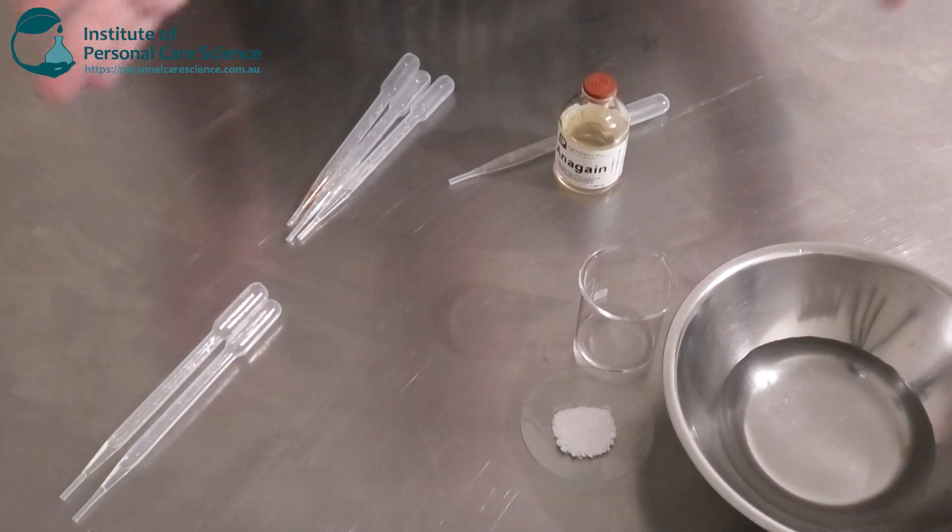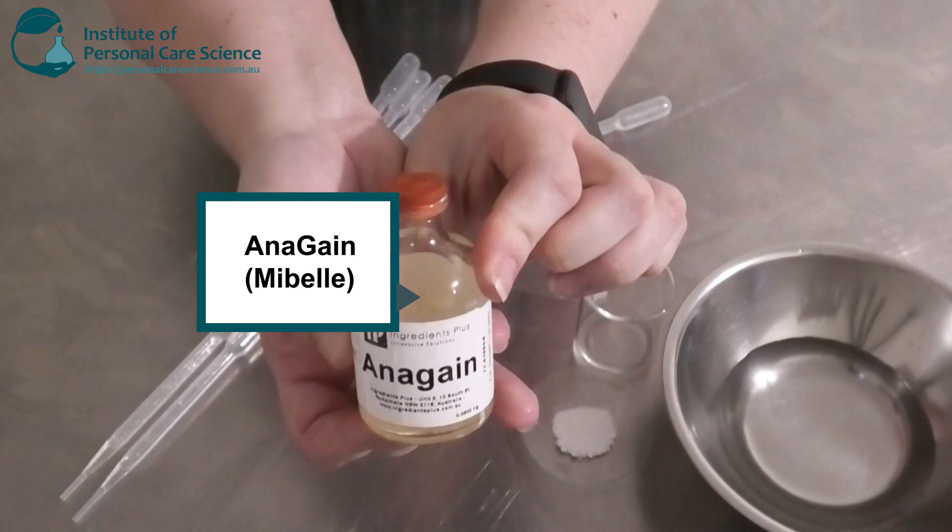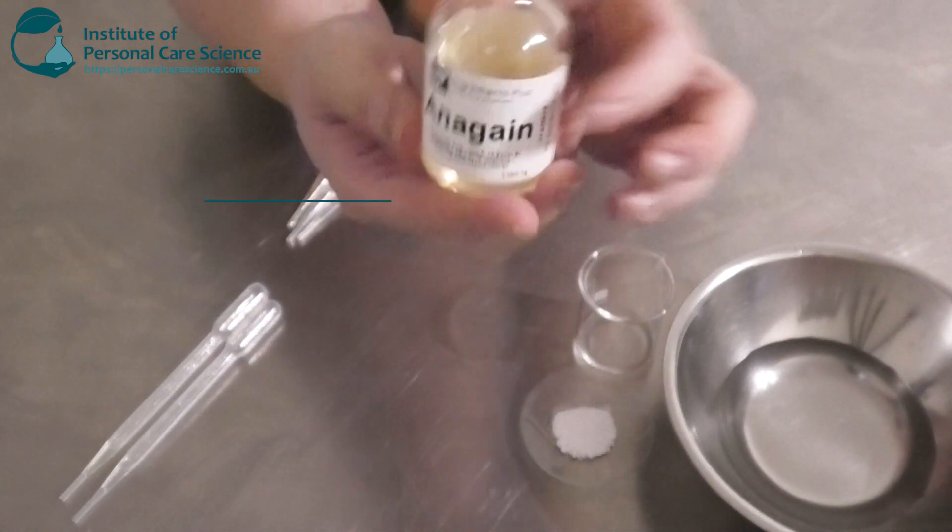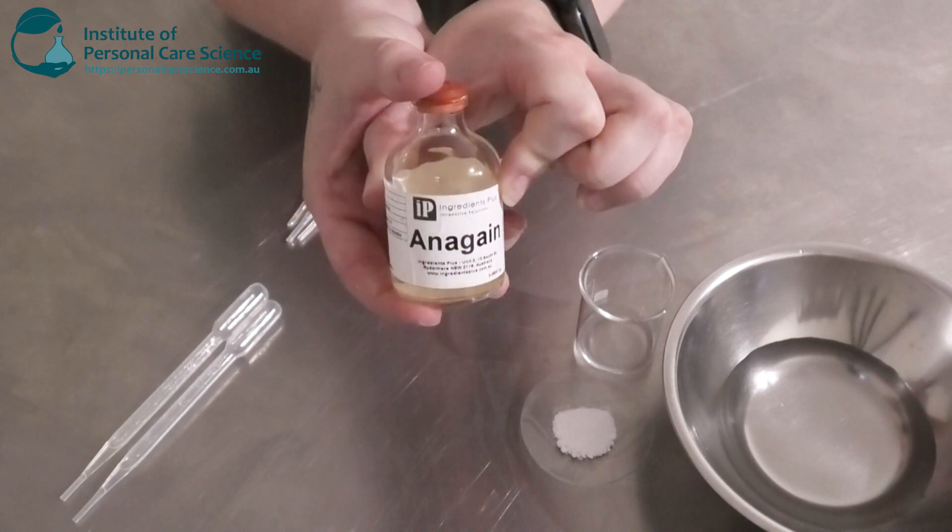Now here are all my phases. The star ingredient I'm going to use today is the Anagane Active from Mybel. This is going to help with the hair loss. It's got really good efficacy data which I will show you and go through later on in the video.